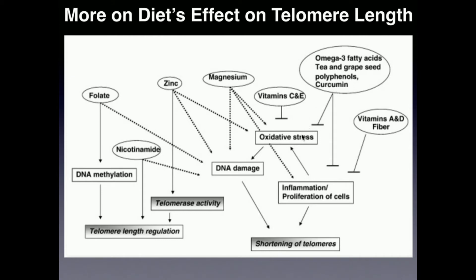Omega-3 fatty acids such as DHA, along with plant-related compounds like polyphenols and curcumin, are potent antioxidants. Antioxidants inhibit and reverse oxidative stress and inflammation, which in turn prevents shortening of the telomeres. The same arguments apply to vitamins C and E — both are antioxidants, with vitamin C mainly acting in the blood. Other nutrients deficient in American diets include folate, which is processed to tetrahydrofolate and ultimately methyl-tetrahydrofolate, involved in DNA methylation. Good DNA methylation helps regulate telomere length and slows its shortening.